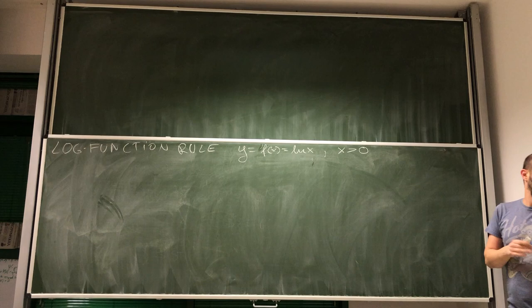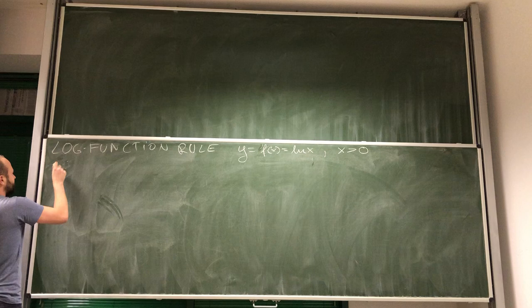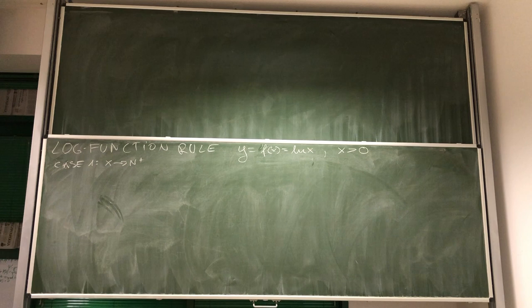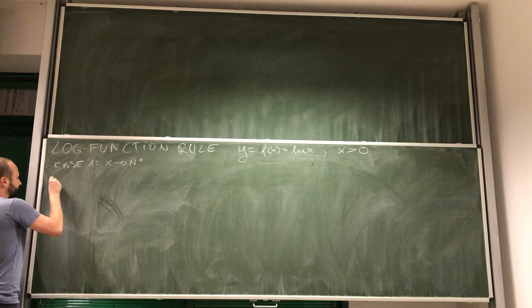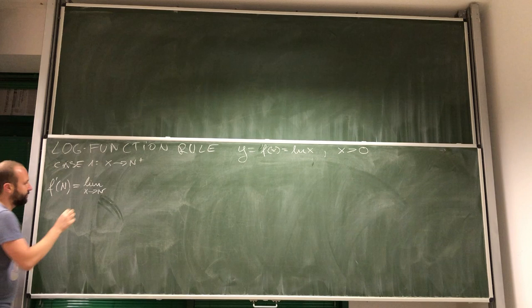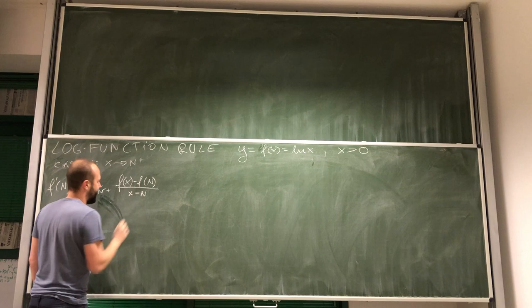We are looking for the derivative, so we are looking for a limit. We have Case 1, where x approaches n from the right-hand side. We calculate f prime of n as the limit, with x approaching n from the right-hand side, of the difference quotient: f of x minus f of n, over x minus n.